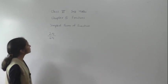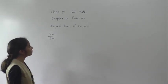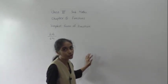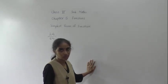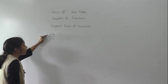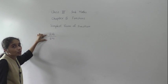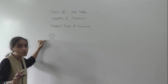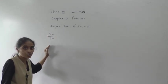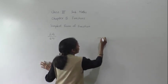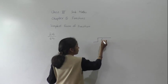Good morning students. Let's start with the simplest form of a fraction — also called the reduced form or lowest term. To find the simplest form of a fraction, we can find the HCF of both given numbers. The first process is to find the HCF using the division method.